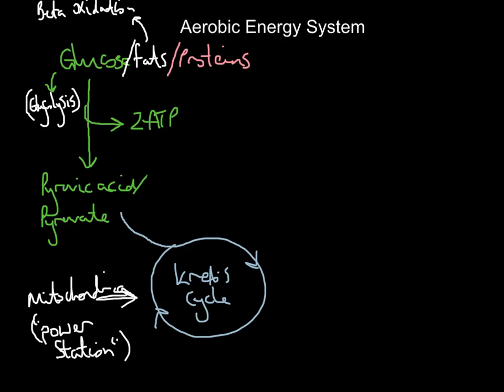So we've got glucose, fats, or protein. One molecule has been broken down, releasing energy for 2 ATP and producing pyruvic acid or pyruvate. Because I have oxygen, because it's aerobic, that doesn't turn into lactic acid. Instead, it enters the Krebs cycle in the mitochondria of the cell.